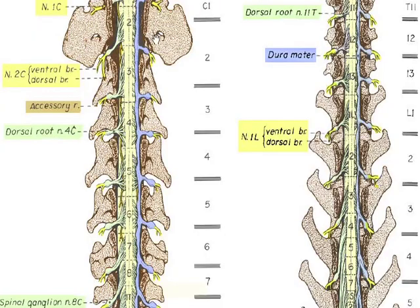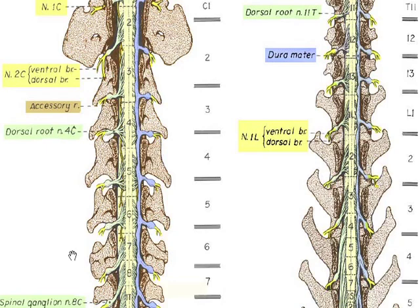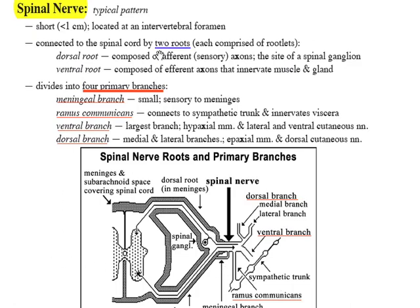This is a drawing of a vertebral canal exposed by a laminectomy — a removal of laminae. The laminae are the tops or roofs of the vertebral arches. Meninges have been removed on the left side but retained on the right side, colored blue. Each spinal cord segment gives rise bilaterally to dorsal roots, which include a spinal ganglion. The spinal nerve, formed by the union of dorsal and ventral roots, is short and located approximately within an intervertebral foramen.